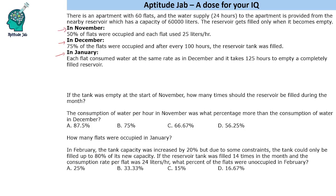This is quite simple. We need to understand one key thing: the number of flats multiplied by their consumption rate will give us how much water is being consumed. If we multiply with the fill rate, that gives us the capacity of the tank. So in summary: Capacity = Number of flats × Consumption × Fill rate. This is analogous to man-days in time and work problems.